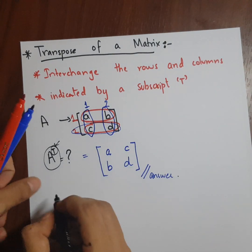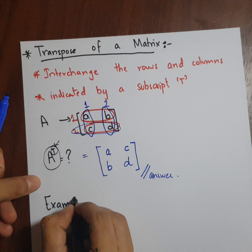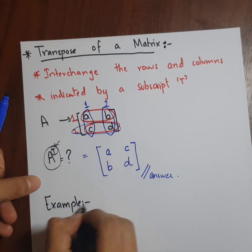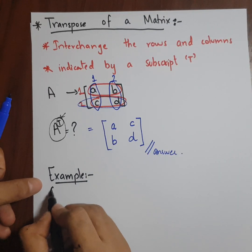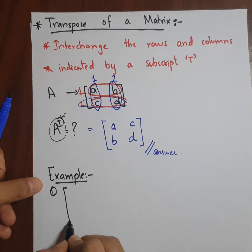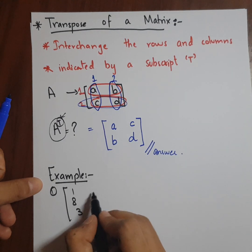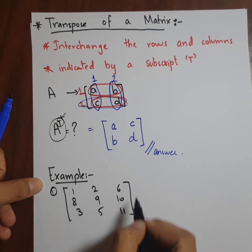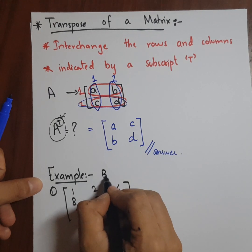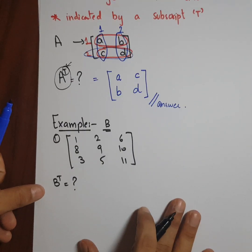Now let's take an example just to get a better idea about this concept. I'll take a matrix with bigger dimensions — for example, 1, 8, 3, 2, 9, 5, 6, 10, 11. This matrix is my B matrix and I'm asked to find the transpose of this matrix.